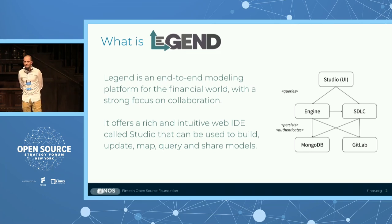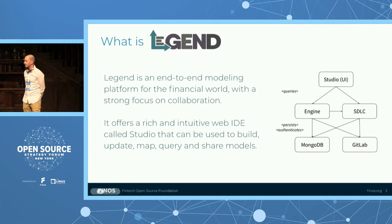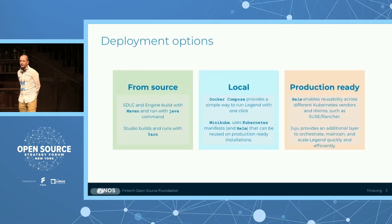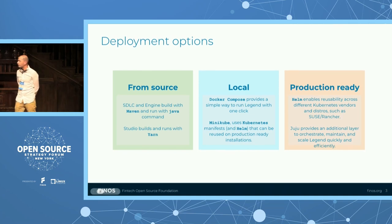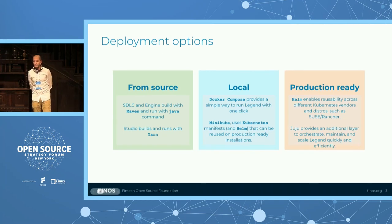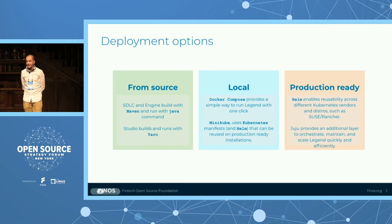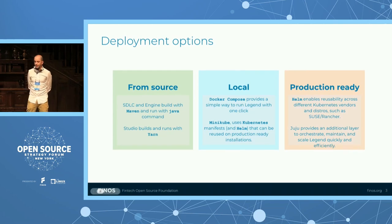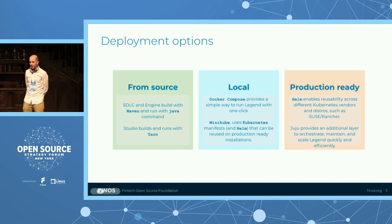So how do we run Legend, and what are the use cases for people to actually start using this technology? We divided the deployment options into three main blocks. Starting from the middle — the local run — which is probably the most common use case. People want to see Legend running on their laptop with a couple of clicks. For this reason, the Legend team contributed a Docker Compose script, part of the main repository at github.com/finos/legend, so you can run it quickly with default configuration on your local environment.